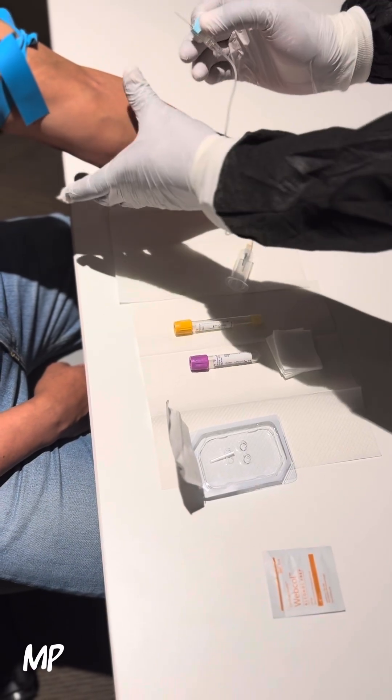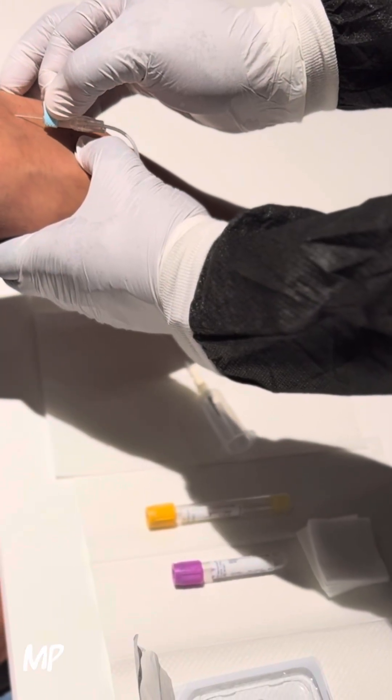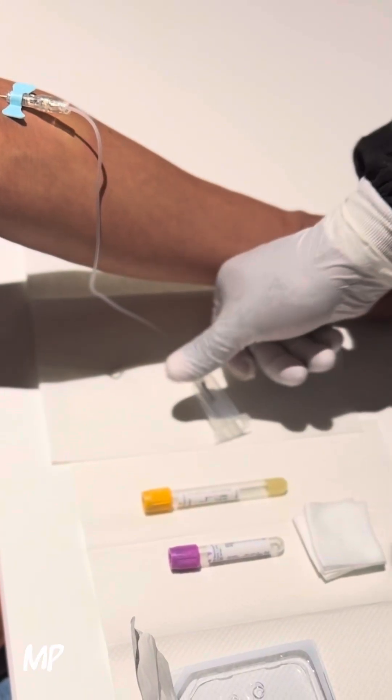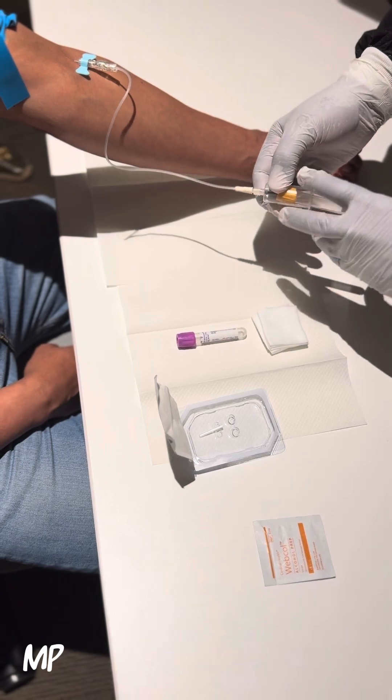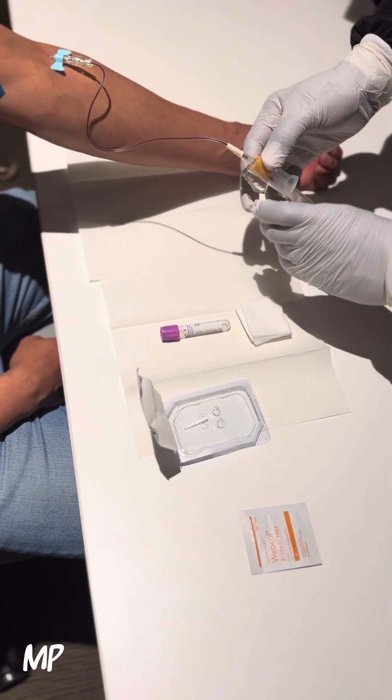Pinch and fold the wings, anchor so the vein doesn't roll. Five to ten degrees, go in, make insertion. Put on your vacutainer tube and allow the blood to flow.